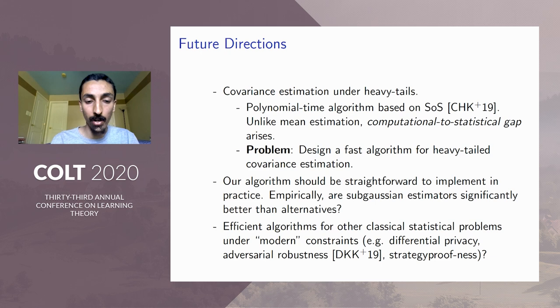So there are several interesting future directions. One is to study the problem of covariance estimation under heavy tails. The second interesting question is to actually implement our algorithm and see what kind of practical implications there are. And finally, it would be of interest to study whether these algorithms are relevant for other classical statistical problems under more modern constraints. Thank you, and I'm happy to take any questions offline.